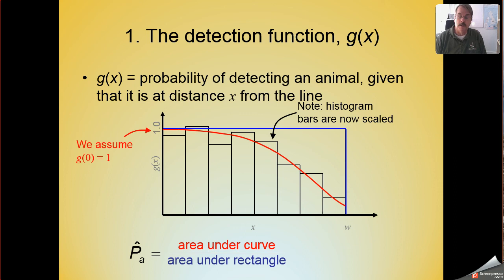This introduced the concept of P hat sub a that was calculated as the area under the detection function curve. That ratio, the ratio of that to the area under the rectangle.